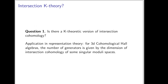A natural question is whether there is a K-theory version of intersection cohomology. Intersection cohomology is very important in understanding the topology of algebraic varieties, and many interesting varieties appearing in representation theory are singular, so it is not surprising that intersection cohomology also has many applications to representation theory. There are Hall algebras constructed using singular cohomology, and a structure result says the number of generators is given by the total dimension of intersection cohomology of some space. There are also versions of these Hall algebras constructed using K-theory, so it is natural to wonder whether there is an intersection K-theory of those singular spaces.